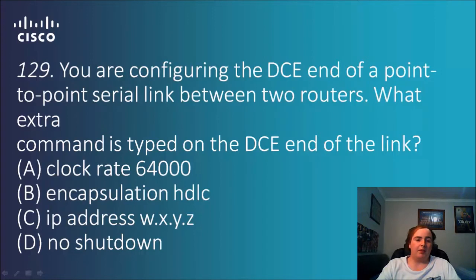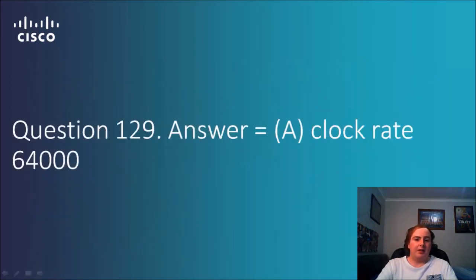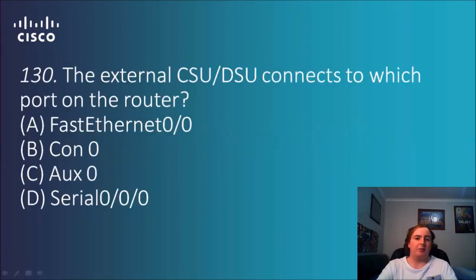Question 129: You are configuring the DCE end of a point-to-point serial link between two routers. What extra command is used on the DCE end of the link? Options: clock rate, encapsulation, IP address, no shutdown. The answer is clock rate 64000. No shutdown and IP address aren't the key concern here; if it's not going to the ISP through the serial port, we configure the clock rate to 64000, which is Cisco's default for that type of connection.